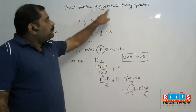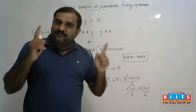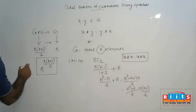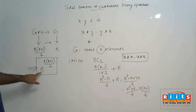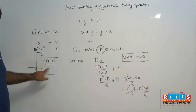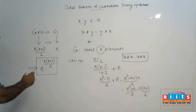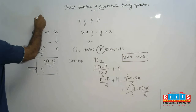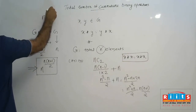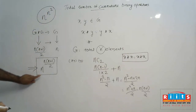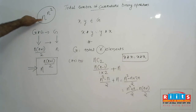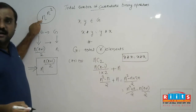That is the shortcut method to find the total number of different commutative binary operations defined on a set. The formula is: total number of commutative binary operations equals n raised to n(n+1)/2. And total number of binary operations is n raised to n².